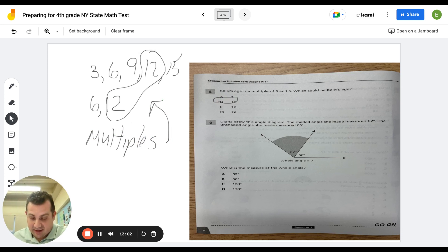Okay. And the last one here. Diana drew this angle, this angle diagram. Right here. Right here. The shaded angle she measured was 62 degrees. The unshaded angle is 66 degrees. What is the measure of the whole angle? The whole angle we don't have. But to get that, you're going to do the 62 degrees plus the 66 degrees, which will make up the whole angle. Two plus six is eight. Six plus six is 12. 128 degrees is C.